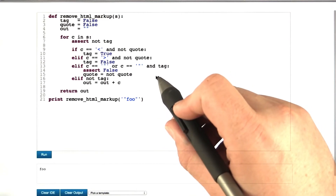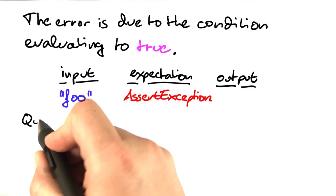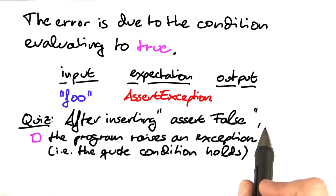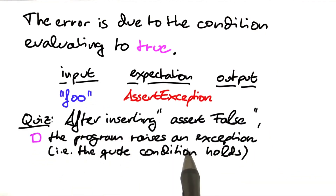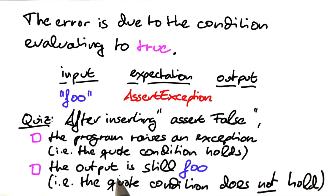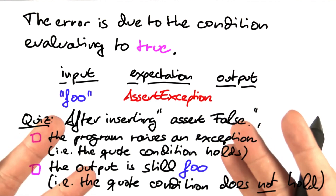Our expectation this time is: with this input, this assertion should fail. We make this a quiz. After we inserted assert false, does the program now raise an exception — meaning that the quote condition holds, and therefore something is wrong with that condition? Or is the output still foo, that is the input with the quote stripped, and the quote condition obviously does not hold because the assert false is never reached? Try this out for yourself.